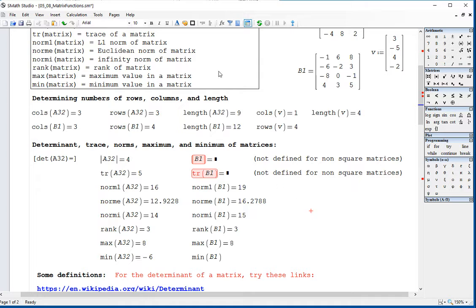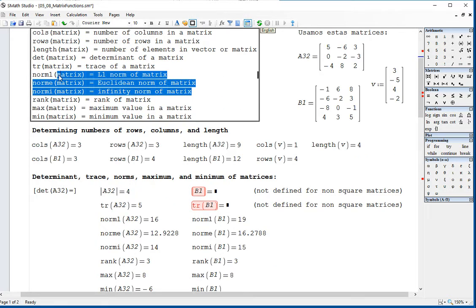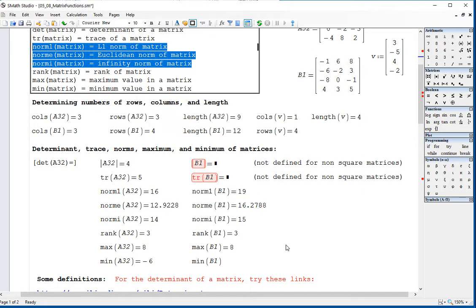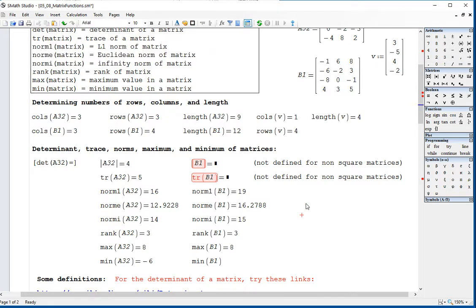Then we have certain norms. Norms are quantities that are used in linear algebra, and I'm just going to mention them here without giving you a definition, you've got to look it up in your books on linear algebra. But there is the L1 norm of a matrix. Then there is the Euclidean norm of a matrix. The Euclidean norm of a vector is actually the length of the vector, the geometric length, the Euclidean length of the vector. So if I take V and I go norm E of V, I'm sorry, it's lowercase v, it gets 7.35.